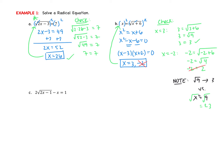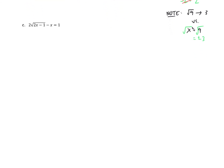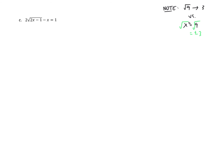We have one last problem on this first set of notes — example C, which is a little bit tougher. We notice right away the radical is not alone, so we're going to have to isolate it. I'm going to add x to both sides, getting 2 times the square root of 2x minus 1 equals x plus 1. Do not square things just yet — the radical is still not alone. I need to divide by 2, giving me the square root of 2x minus 1 equals (x plus 1) over 2. Now the radical is alone — that was step 1.